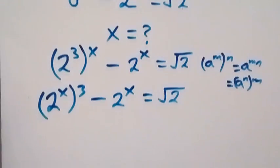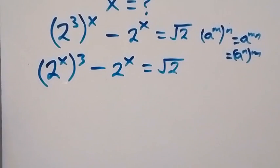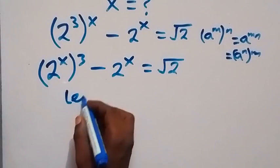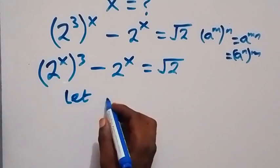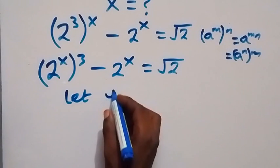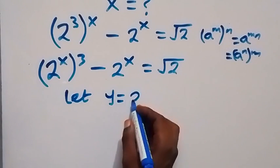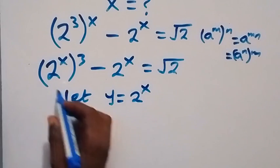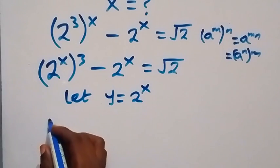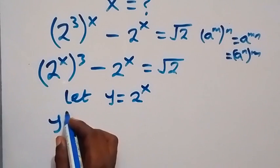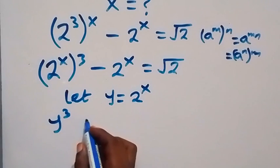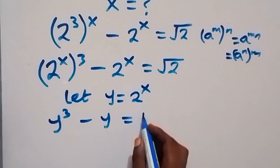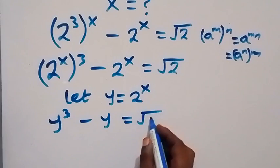In the next step, we have 2 raised to power x — so let y equals to 2 to the power of x, then we replace that with y. We now have y raised to power 3, minus y, equals to root 2.